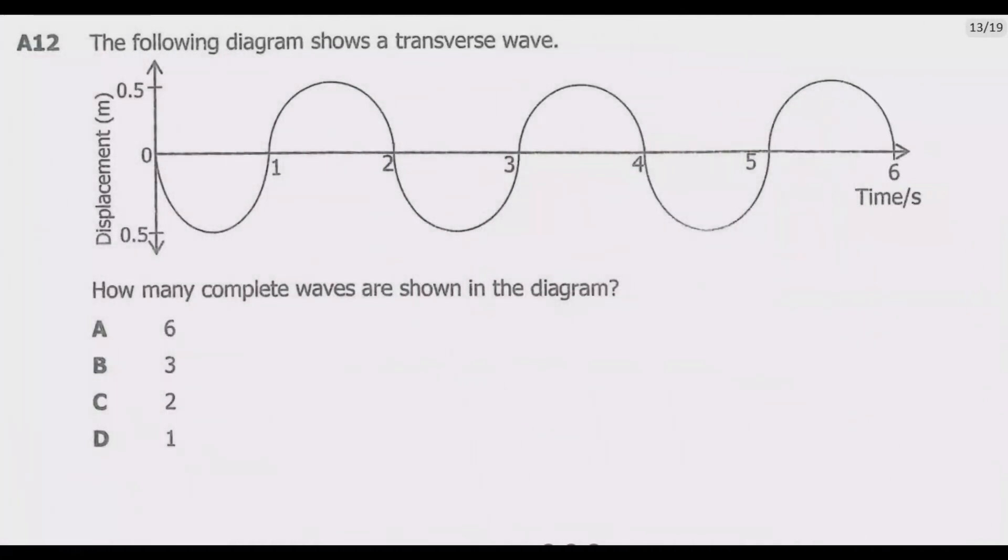Question A12: The following diagram shows a transverse wave. We have the displacement and time on the x-axis. How many complete waves are shown in the diagram? The temptation is to just check the time which is six seconds or count and say there are six. That's why there is this six which is incorrect. So we need to avoid that.